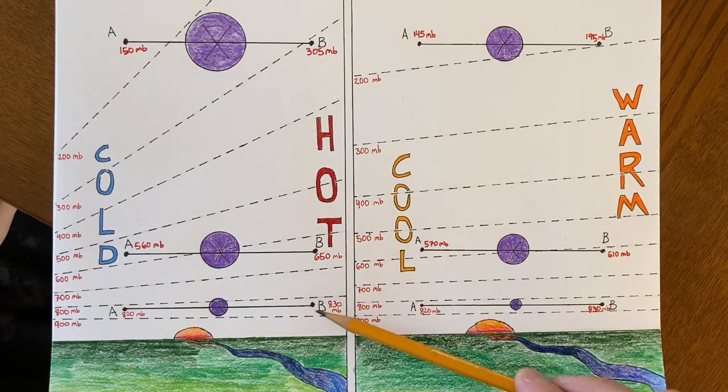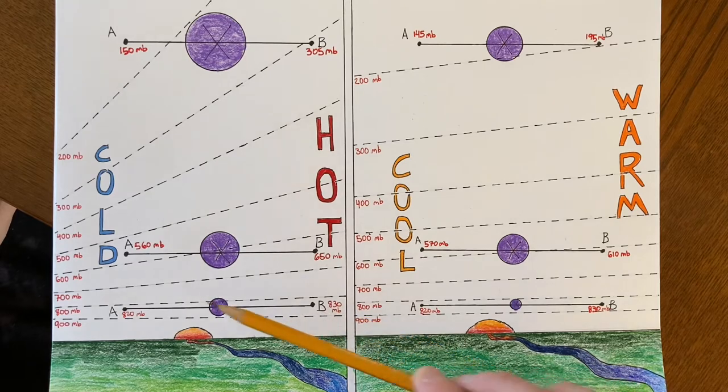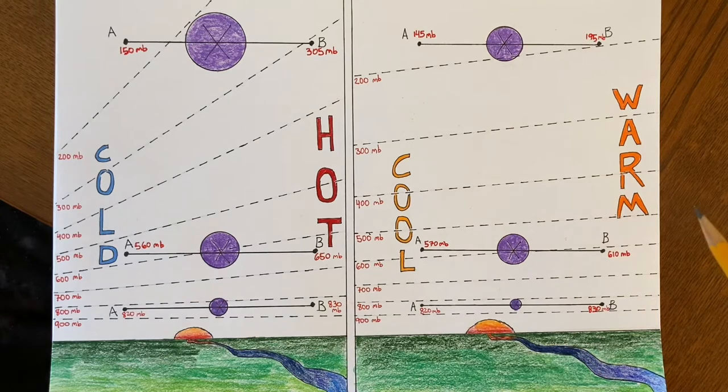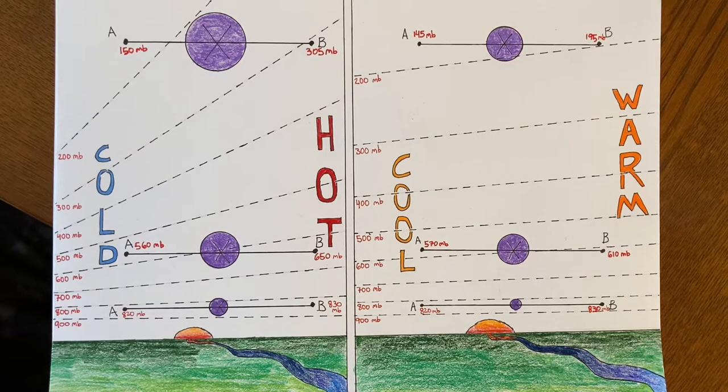Here at B, say it's maybe about 830 millibars, whereas over at A, at the same height above the ground, it's about 820 millibars. So there's a small pressure difference. And a pressure difference over a distance is going to result in wind. So there's going to be a little bit of wind.